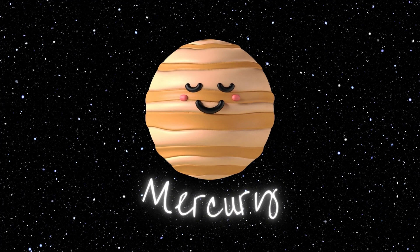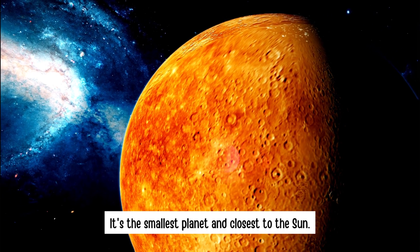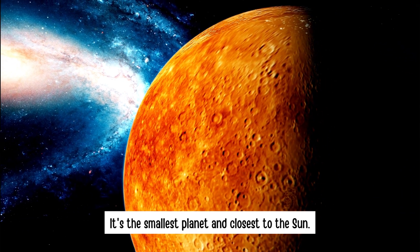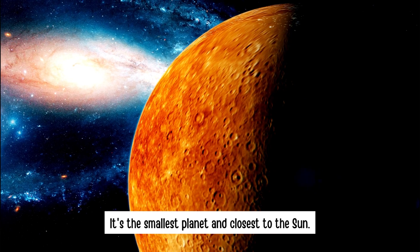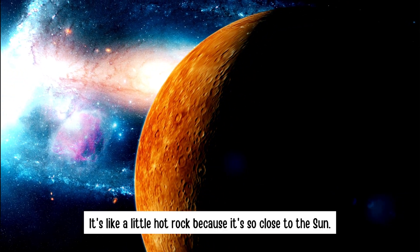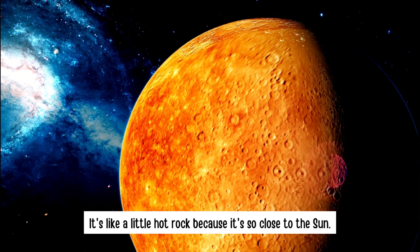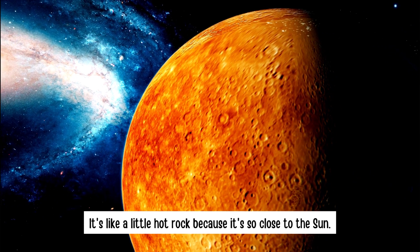Mercury. It's the smallest planet and closest to the sun. It's like a little hot rock because it's so close to the sun.